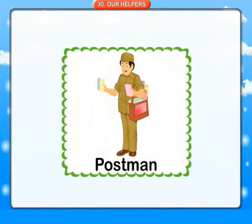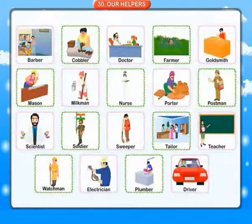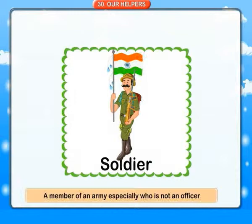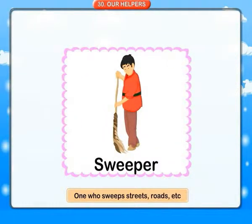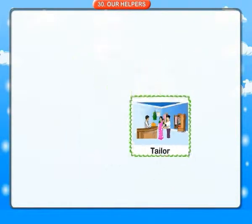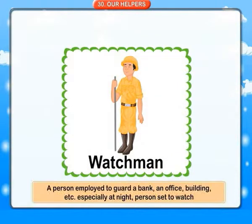Postman: a person who collects and delivers letters, parcels, etc. Scientist: an expert in science. Soldier: a member of an army, specially one who is not an officer. Sweeper: one who sweeps streets, roads, etc. Tailor: one who stitches clothes. Teacher: one whose profession is to teach. Watchman: a person employed to guard a bank, office, building, etc., specially at night.